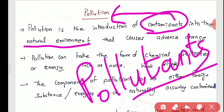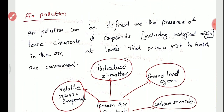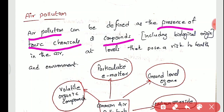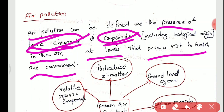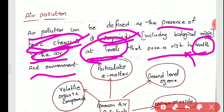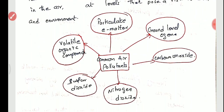You have to remember this. Mainly in our syllabus we are going to focus on air pollution, water pollution, and noise pollution. Air pollution is defined as the presence of toxic chemicals or compounds in the air at levels that pose a risk to the health of humans, animals, and also the health of the environment. Now we will see what the air pollutants are.